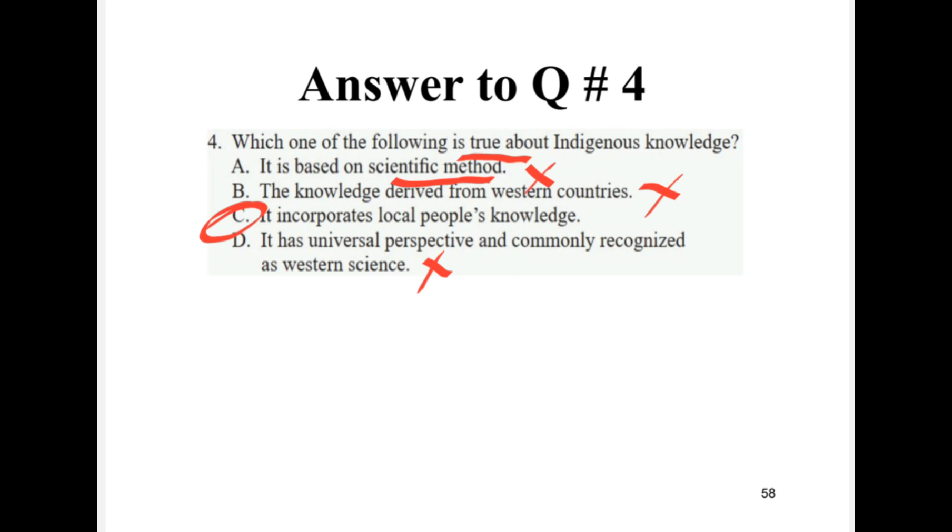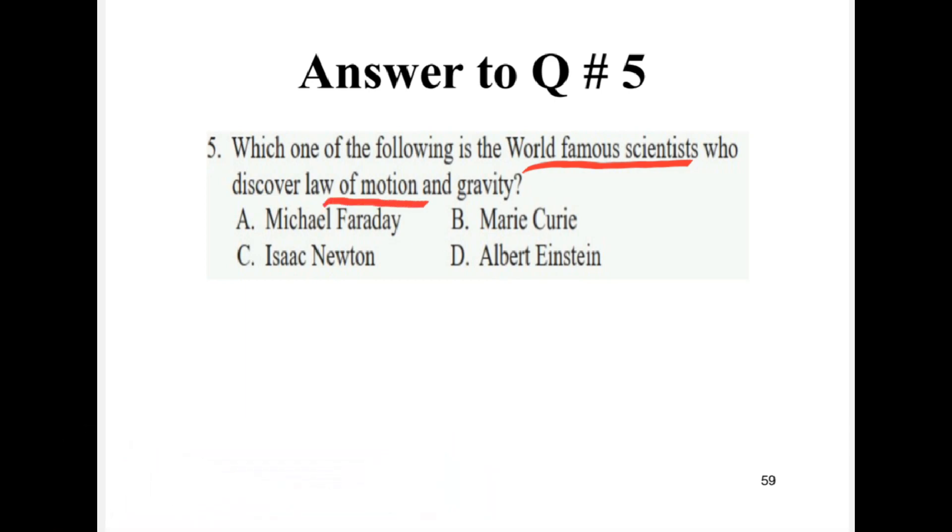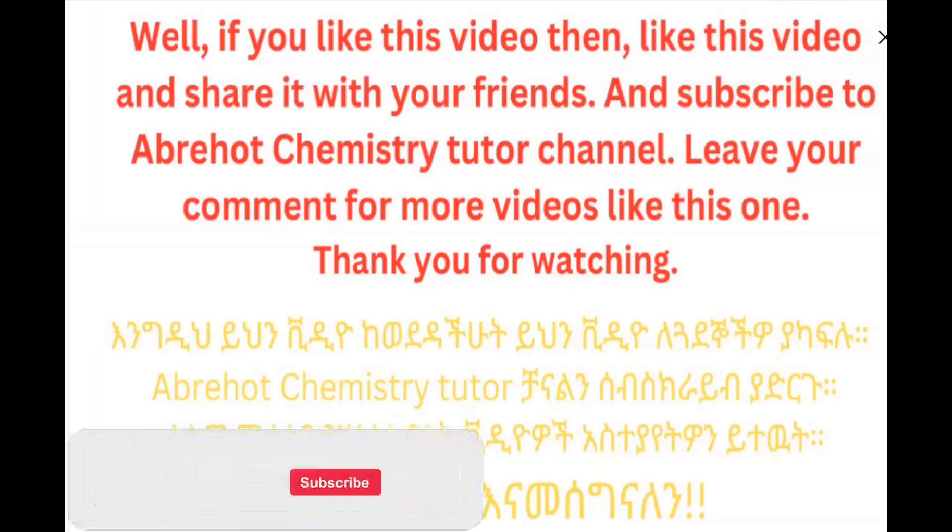Question number five: Which one of the following is the world famous scientist who discovered law of motion and gravity? Isaac Newton discovered the laws of motion and law of gravity, so the answer is Isaac Newton.